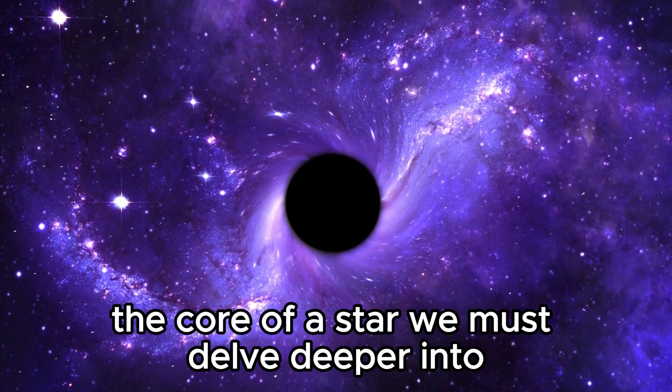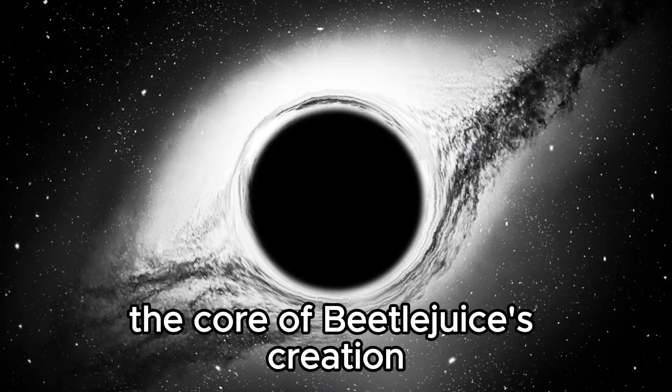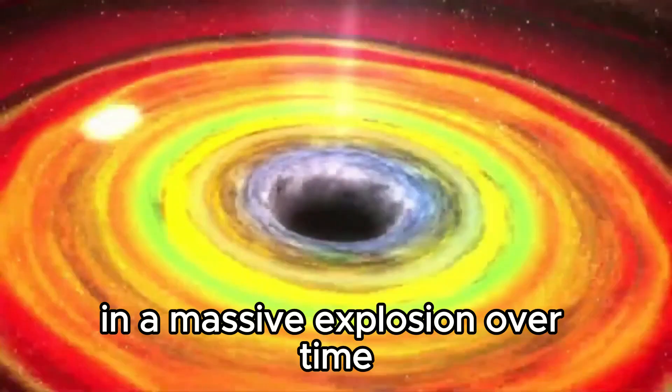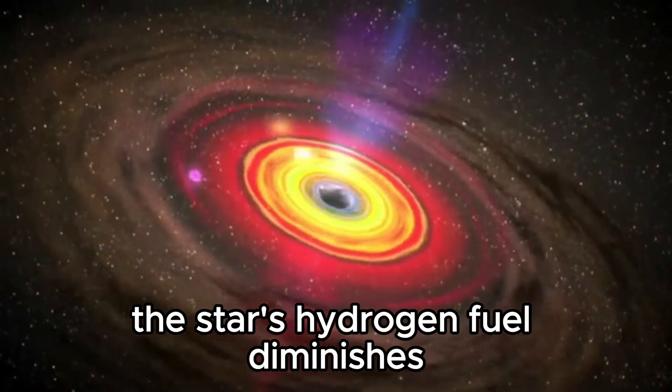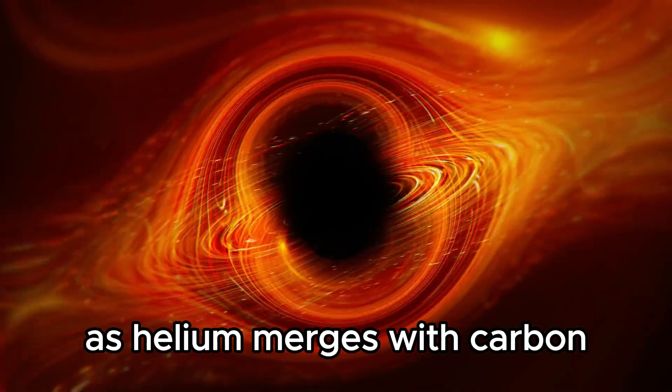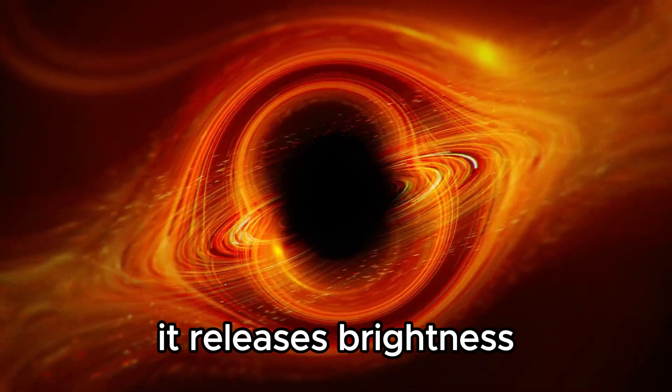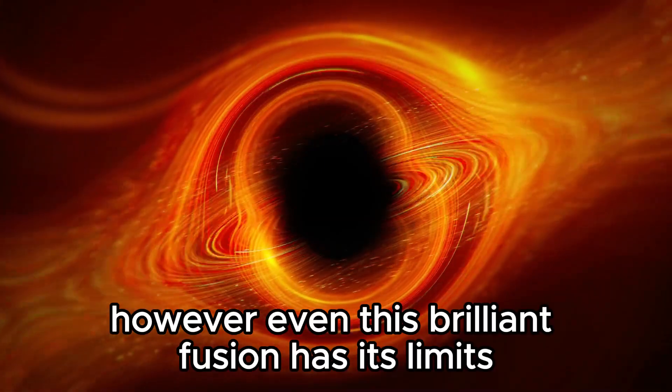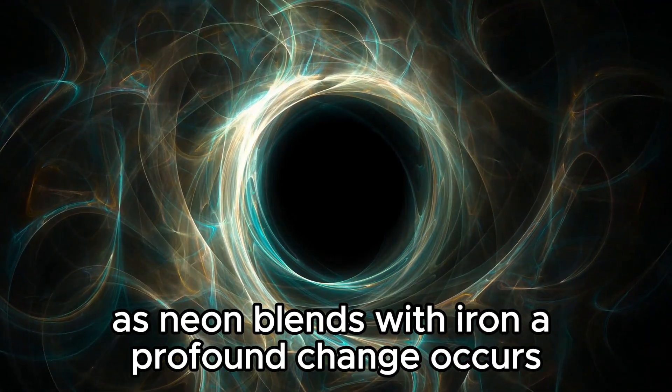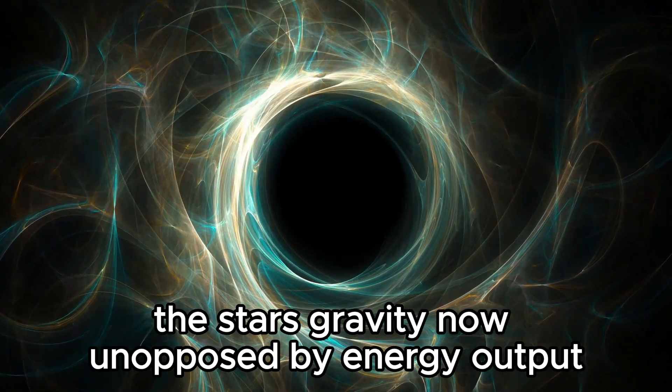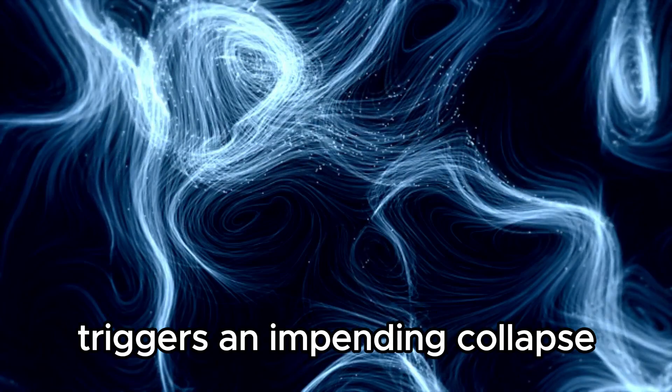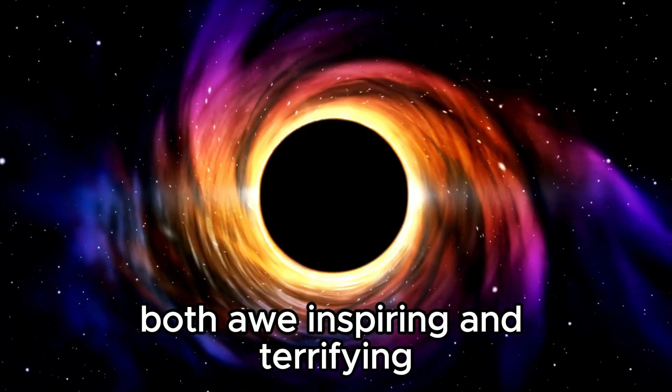The core of a star: We must delve deeper into the core of Betelgeuse's creation, where the nuclear fusion of hydrogen creates helium in a massive explosion. Over time, the star's hydrogen fuel diminishes, leading to a celestial transformation. As helium merges with carbon, it releases brightness that courses through the universe. However, even this brilliant fusion has its limits. As neon blends with iron, a profound change occurs. The star's gravity, now unopposed by energy output, triggers an impending collapse, pushing Betelgeuse toward a fate both awe-inspiring and terrifying.